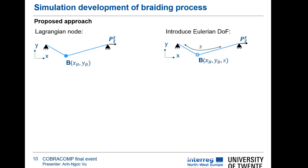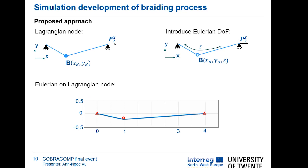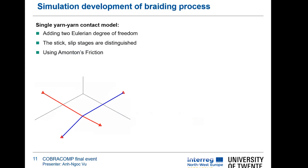Our approach uses the so-called Euler-Lagrange method. We assume a 2D yarn which has a contact point at B, described by x and y coordinates. In reality, the contact point will slide or move along the length of the yarn. To handle this, we introduce a new degree of freedom — the Euler-Lagrange degree of freedom — which allows the material to go through the point. Using this idea, we were able to develop a single-contact yarn-to-yarn contact model.